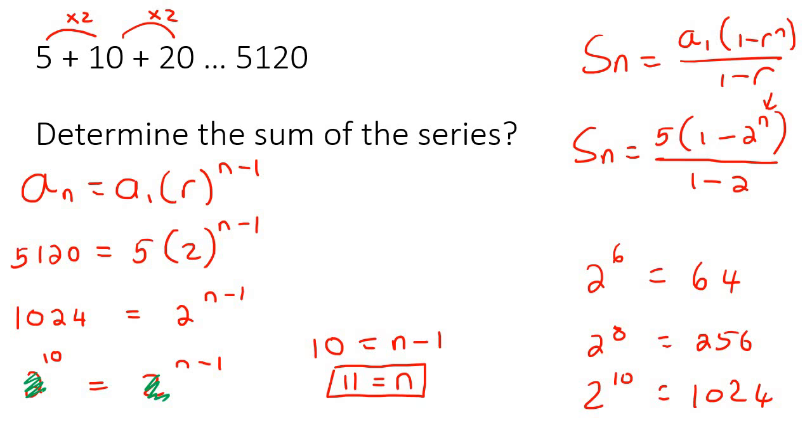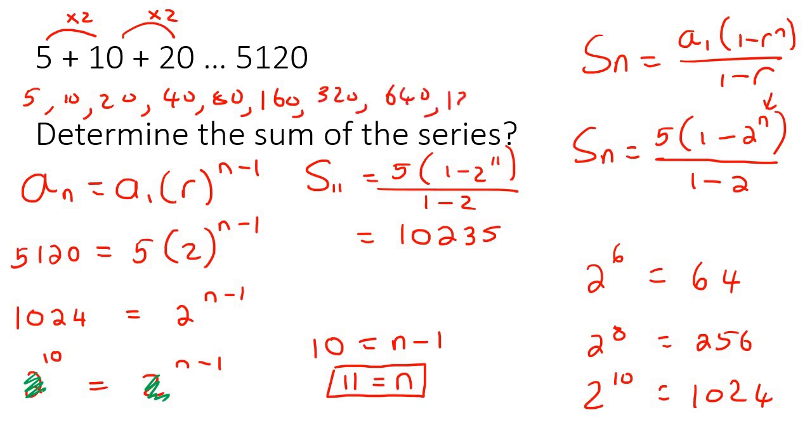And so now we have 11 terms. We can now go back to this formula that we were busy with earlier, and we now know that n is 11. Go ahead, type it all on the calculator, and that's going to give us 10,235. What that actually means is that if you had to go add all of these numbers together, you would actually end up with that. That is what the S formula does. It works out the sum of all of the numbers.